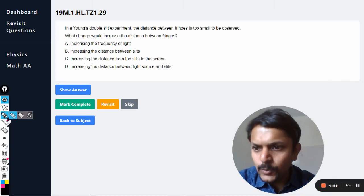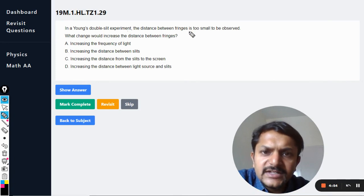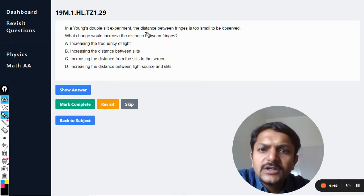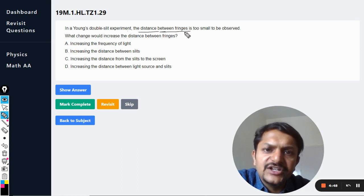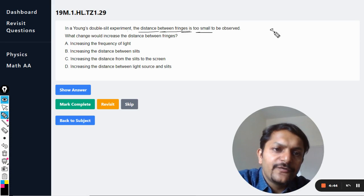Okay dear students, let us see what is there in this question. In a Young's double slit experiment, the distance between the fringes is too small to be observed. The distance between the fringes is too small. So if you are talking about the fringe spacing, fringe spacing is lambda capital D divided by small d.